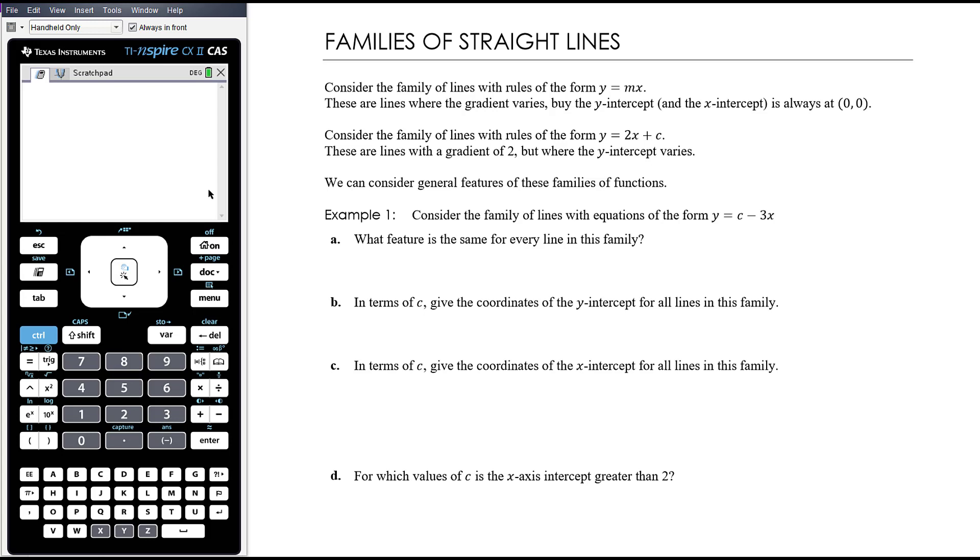And it's sort of just a nice mixture of questions. The idea of a family of straight lines is a group of straight lines that have a common feature, but some variable features. So for example, we could talk about the family of straight lines with equations of the form y equals mx. So these are lines where the gradient can change, because m can change, but there's no plus c, or the c is 0, so the y-intercept is always at 0,0. So this is the family of straight line graphs that go through the origin, but have all different gradients.